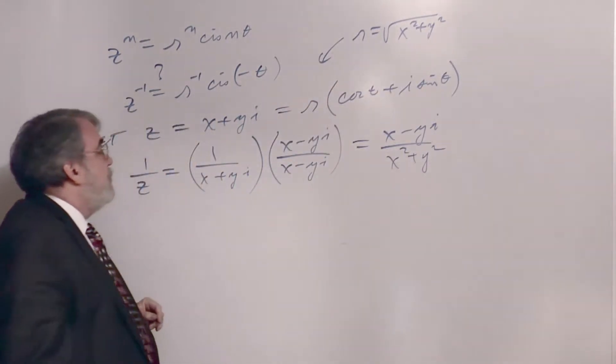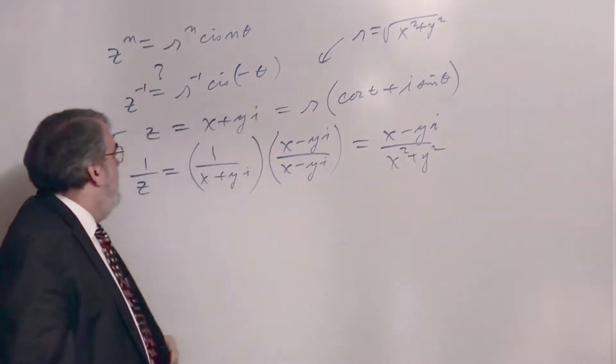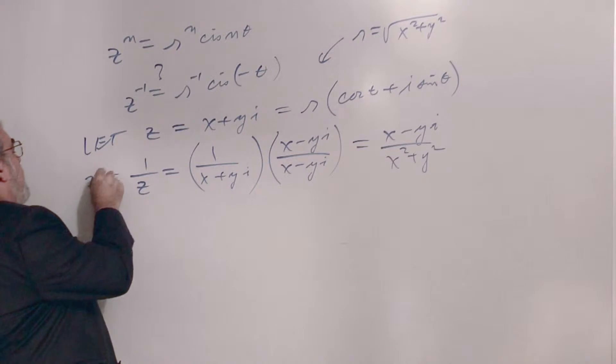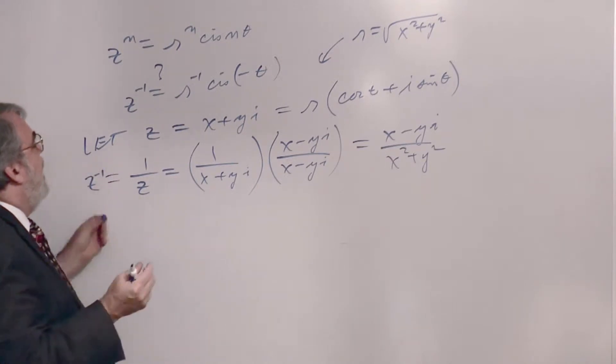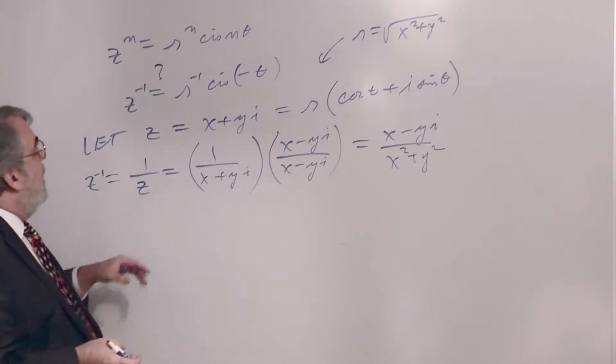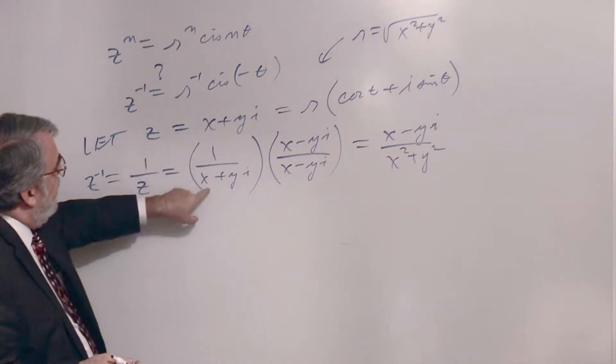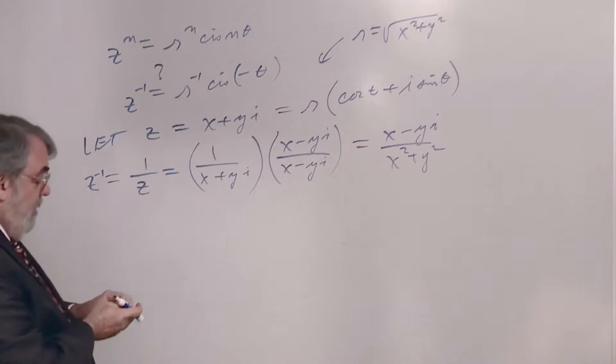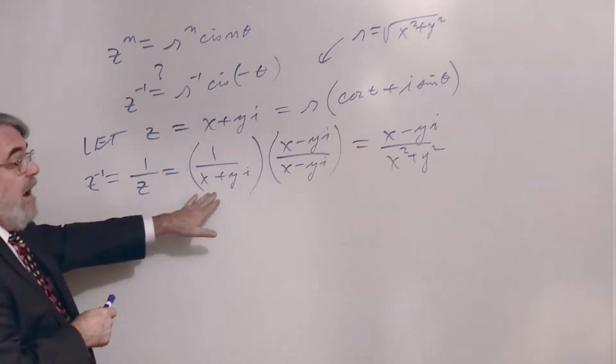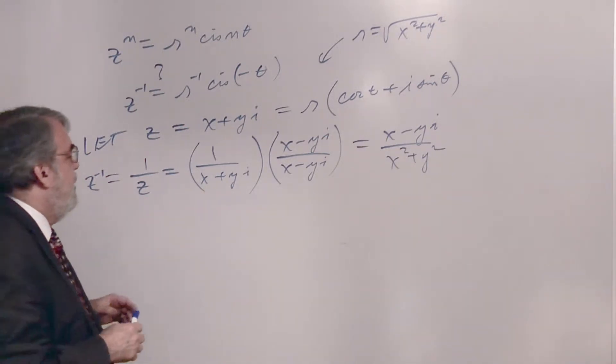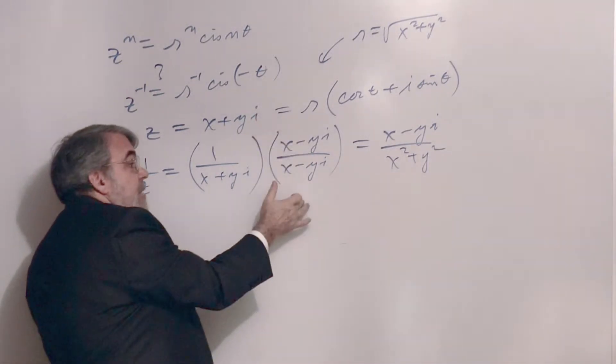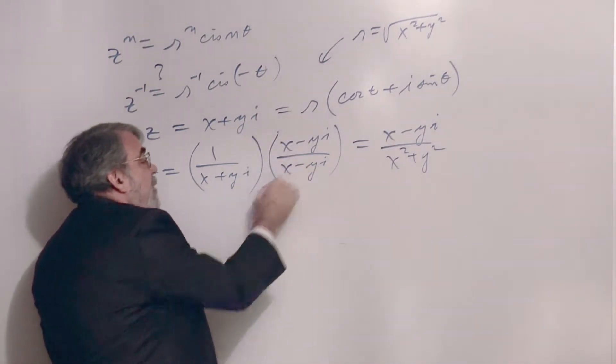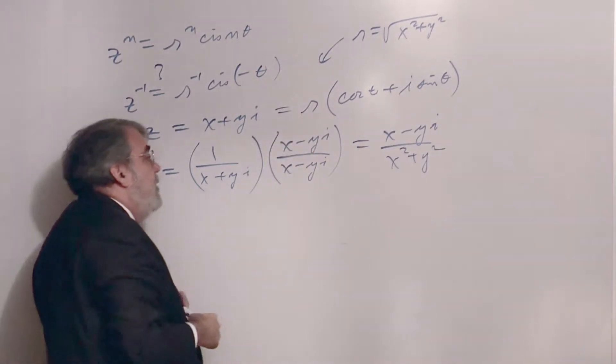Okay. So, with that in mind, I said, well, z to the minus 1, we know is 1 divided by z, just from algebra. And so, what would it look like? So, it's 1 over x plus yi. And to simplify a complex number like this, we're going to rationalize the denominator. It means multiply numerator and denominator by the conjugate of the denominator. So, I have x minus yi here, under x minus yi.